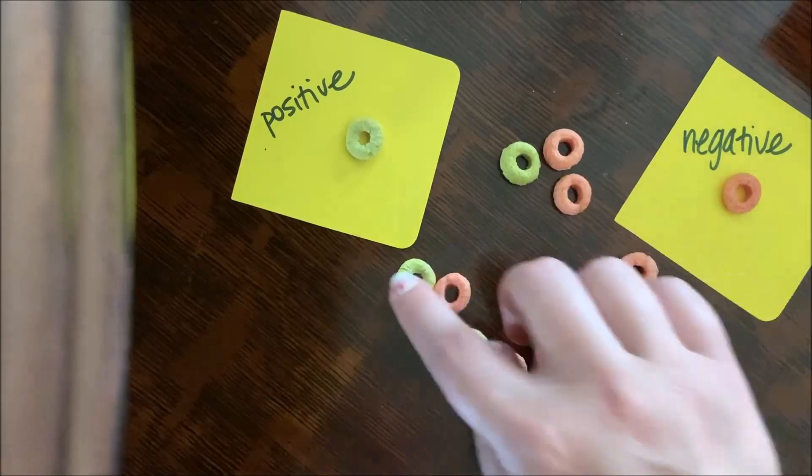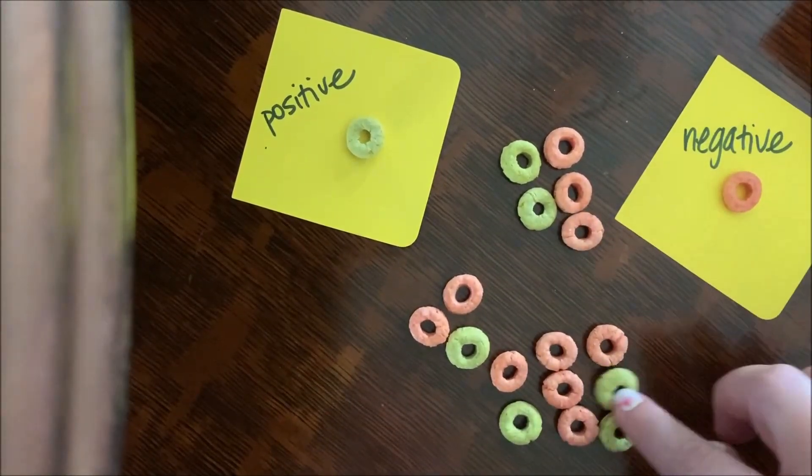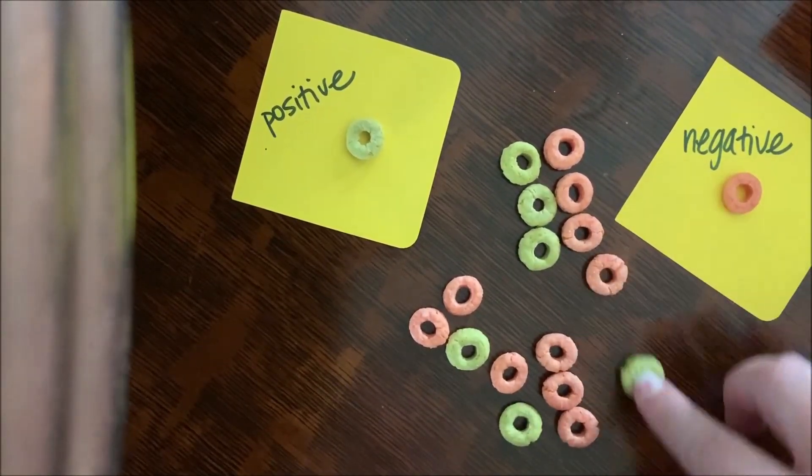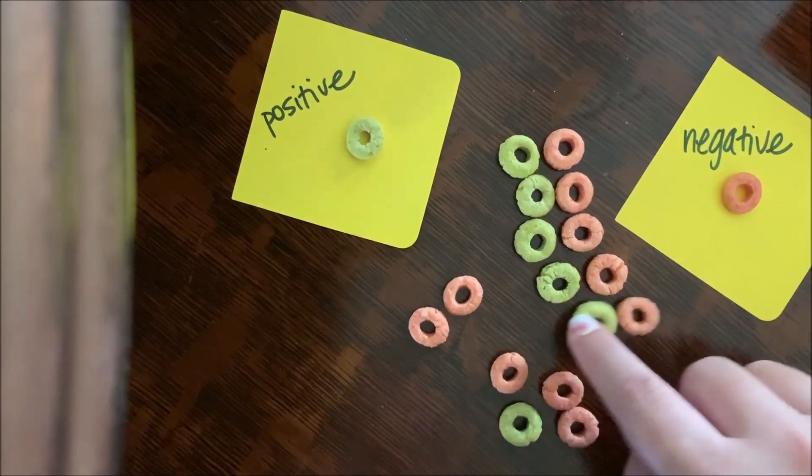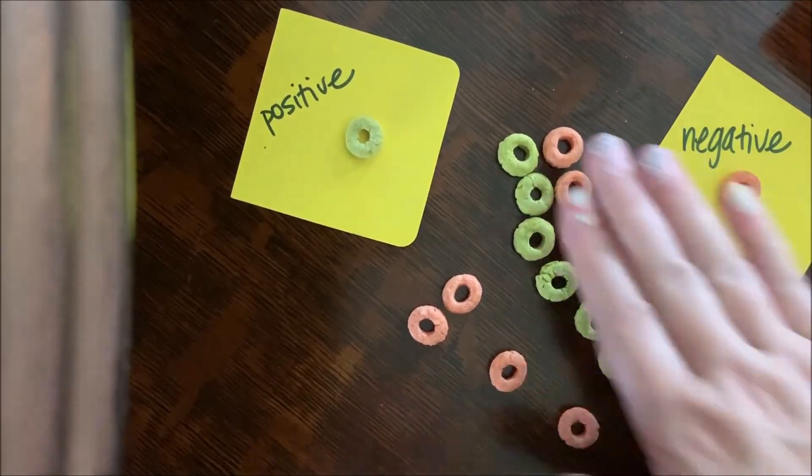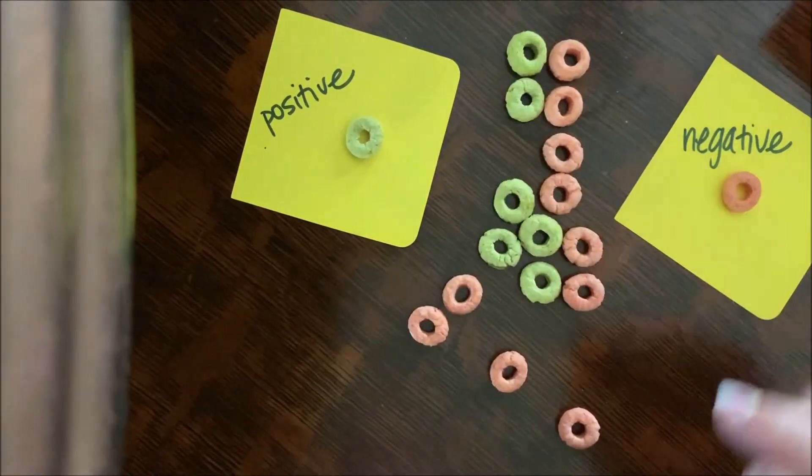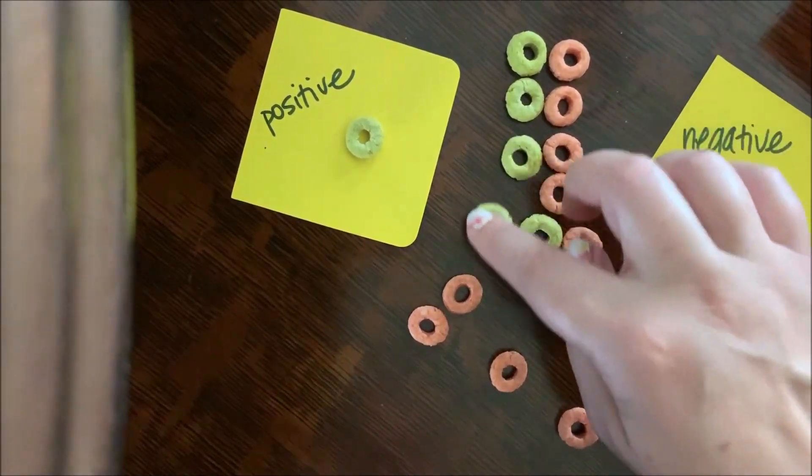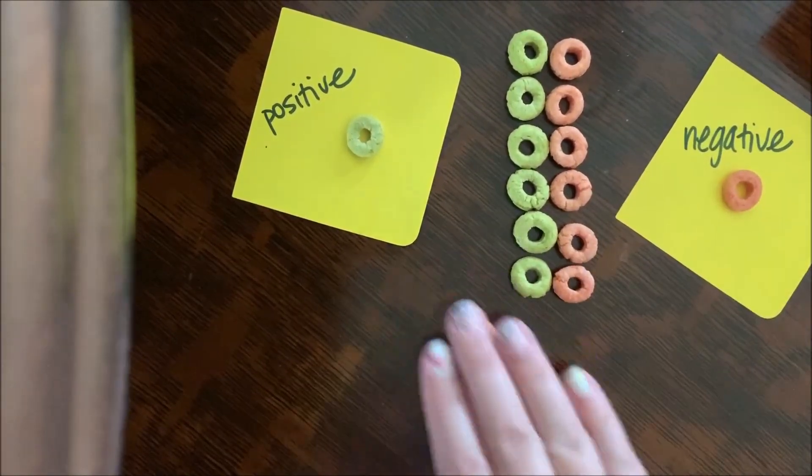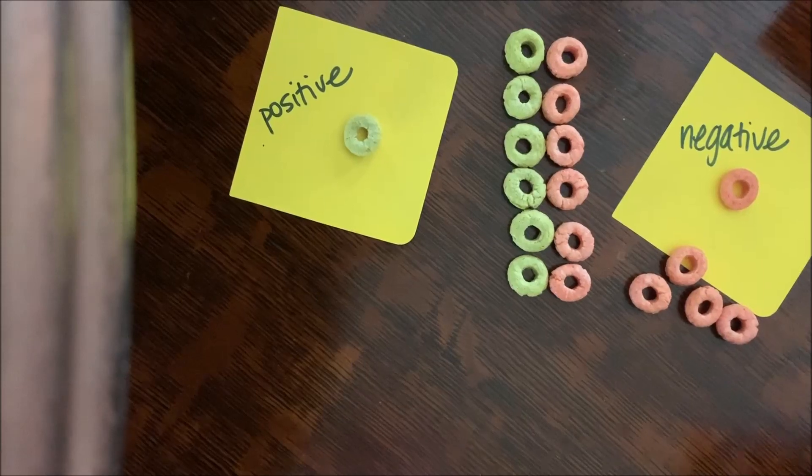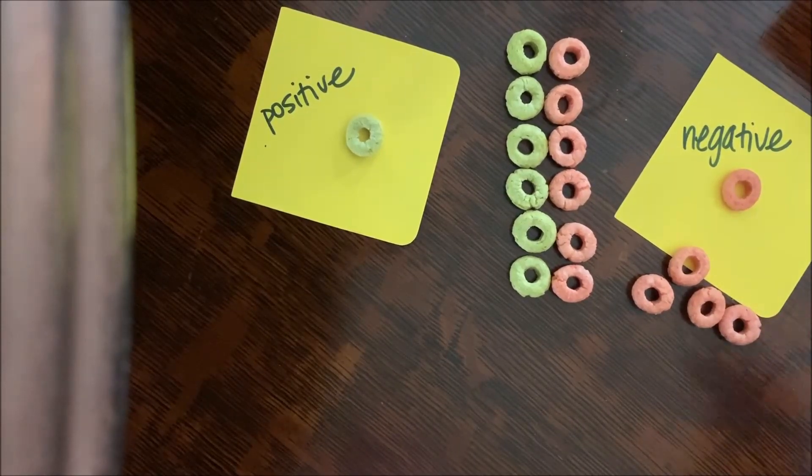So one, two, three, four, five, six. Six zero pairs. And I have four negatives left over. So let's see what it looks like.